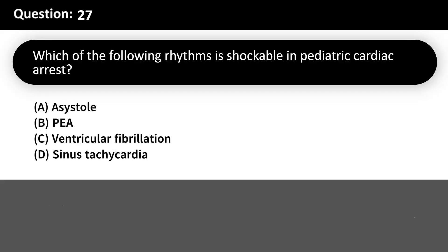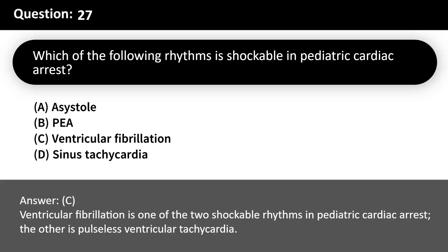Which of the following rhythms is shockable in pediatric cardiac arrest? A. Asystole. B. PEA. C. Ventricular fibrillation. D. Sinus tachycardia. Answer: C. Ventricular fibrillation is one of the two shockable rhythms in pediatric cardiac arrest; the other is pulseless ventricular tachycardia.